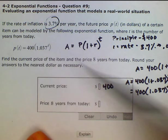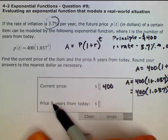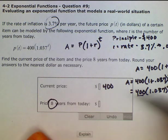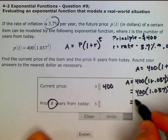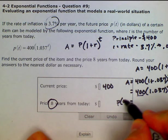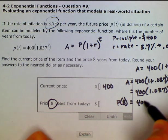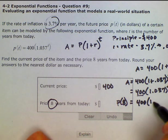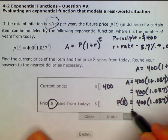So our initial principal. And then if we wanted to find the price 8 years from now, it's just a matter of plugging in 8 for our T, which is time. So it would be equal to 8 years from now, or our principal at 8 years is equal to 400 times 1.037 raised to the 8th power.